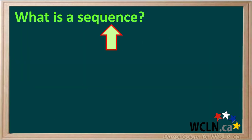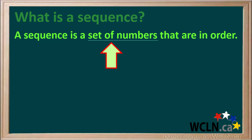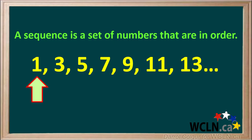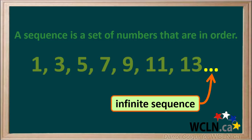What is meant by a sequence? A sequence is a set of numbers that are in some kind of order. Let's consider this set of numbers — all the odd numbers from 1 through 13. The three dots at the end of the listed numbers mean that this sequence can go on forever. The next numbers would be 15, 17, 19, and just keep on going until infinity.